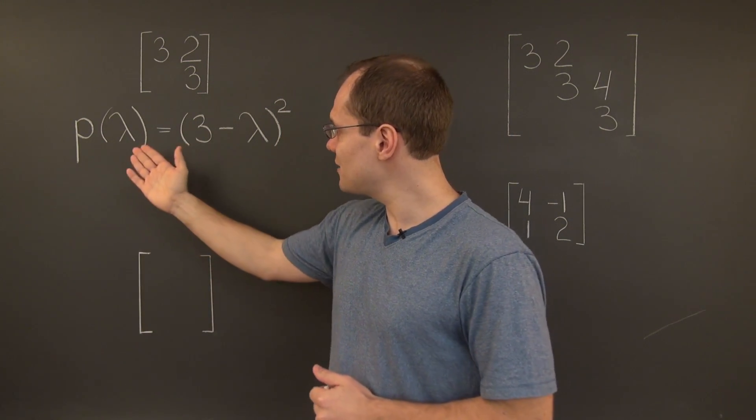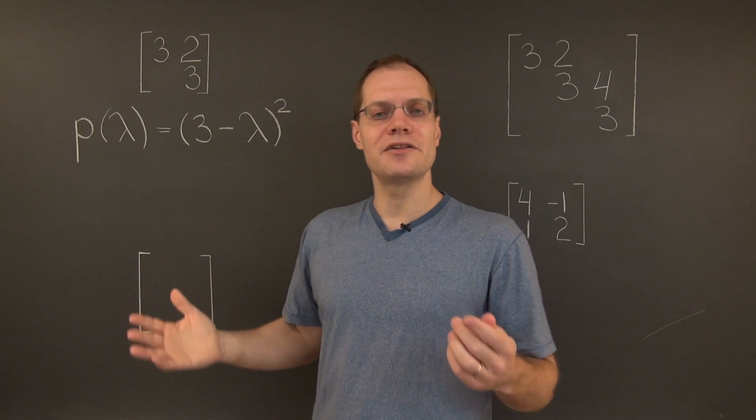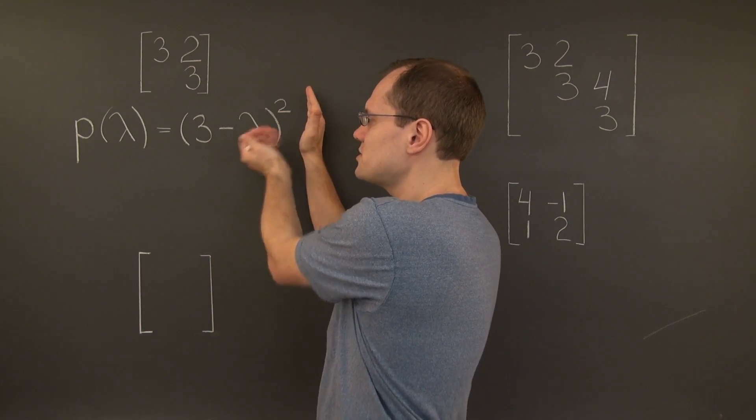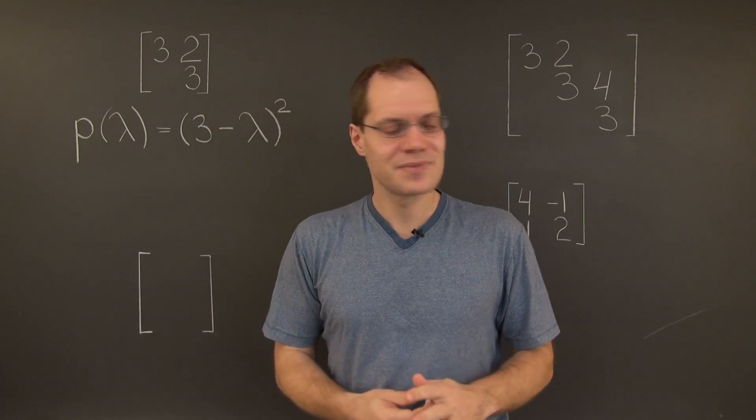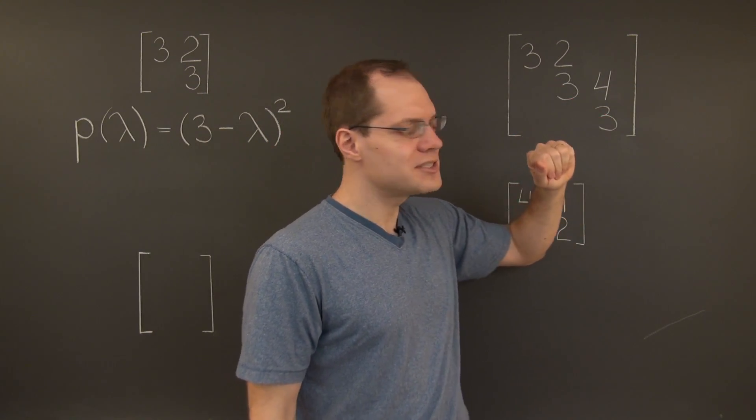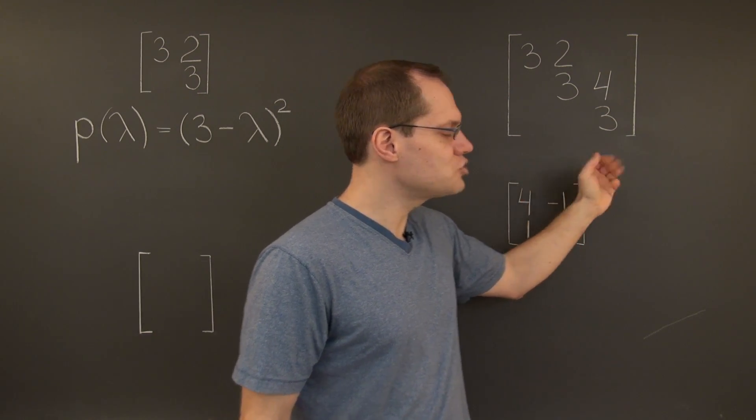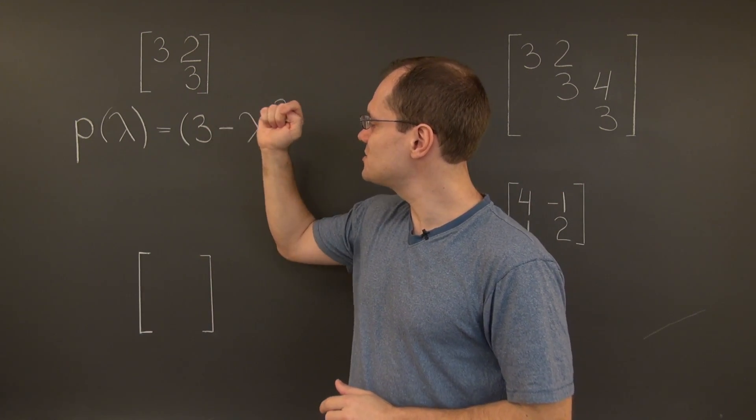And it will be easy to see that 3 is a double eigenvalue of this matrix, simply because the characteristic polynomial of this matrix has 3 minus lambda squared and no other terms. You always get a characteristic polynomial with just a single term when you're working with a triangular matrix.